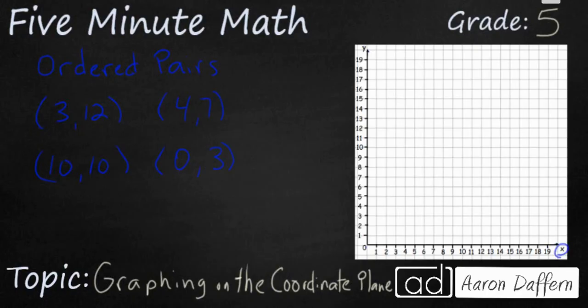What you should notice is we have two letters on the screen. This X down here refers to the X axis, and it is horizontal. It goes side to side. So this line right here that goes all the way across the bottom here, that is known as the X axis.